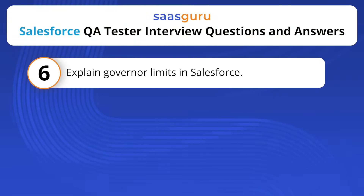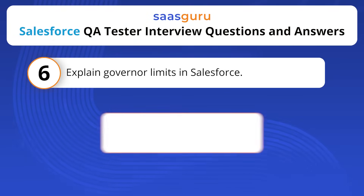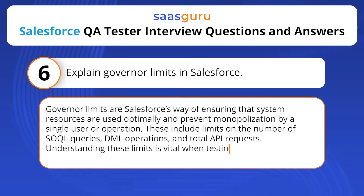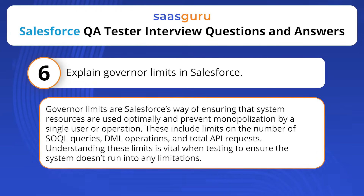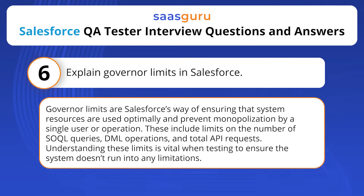Explain governor limits in Salesforce. Governor limits are Salesforce's way of ensuring that system resources are used optimally and prevent monopolization by a single user or operation. These include limits on the number of SOQL queries, DML operations, and total API requests. Understanding these limits is vital when testing to ensure the system doesn't run into any limitations.